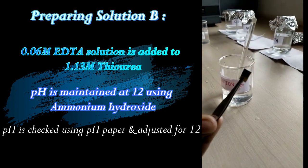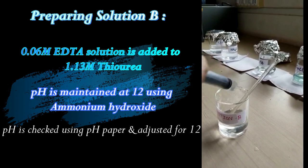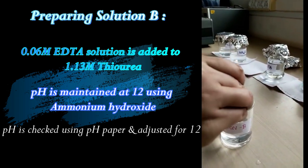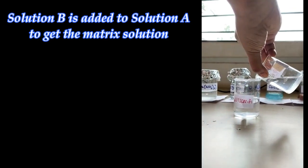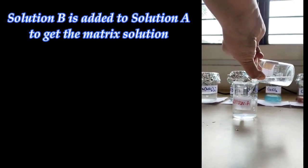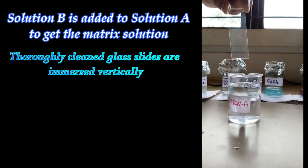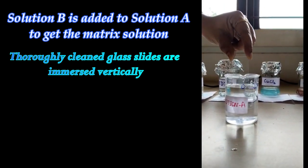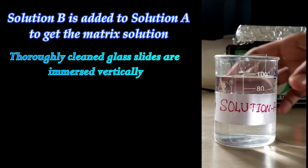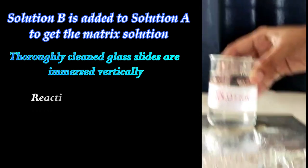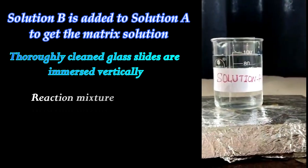Finally, solution B is added to solution A. That is, the solution containing the sulfur source is added to the solution containing cadmium source. Then thoroughly cleaned and dried glass slides are inserted in this reaction mixture and kept for heating on the heater.